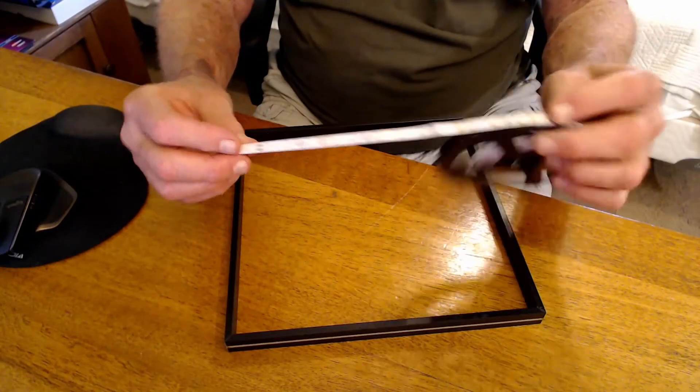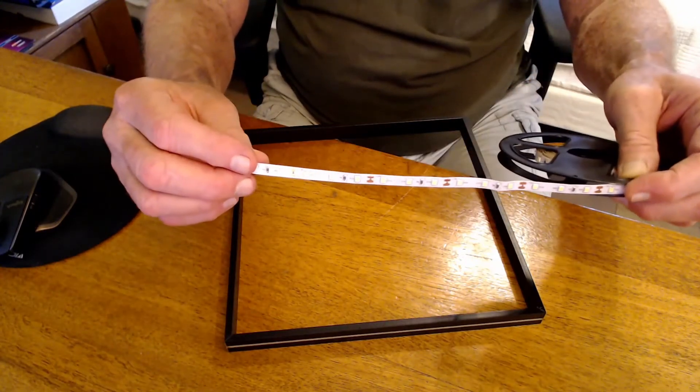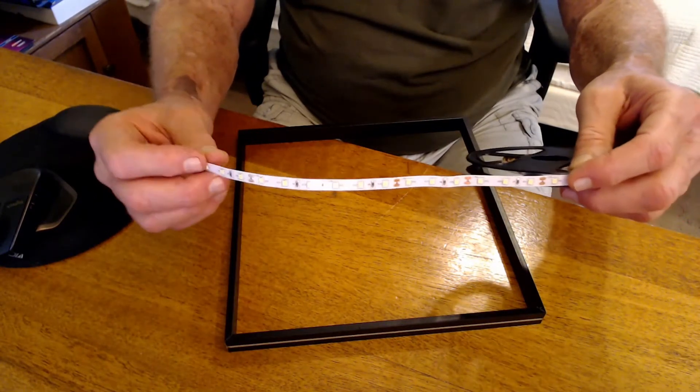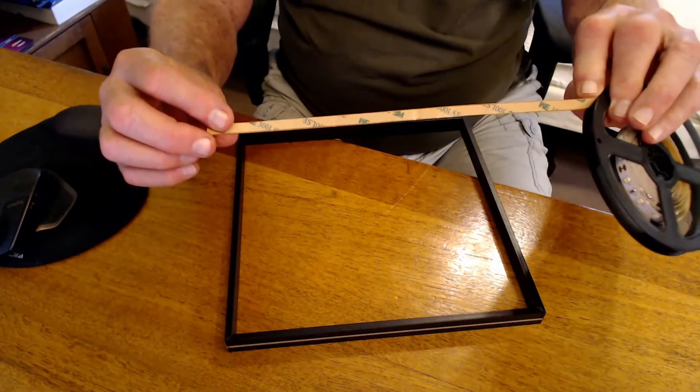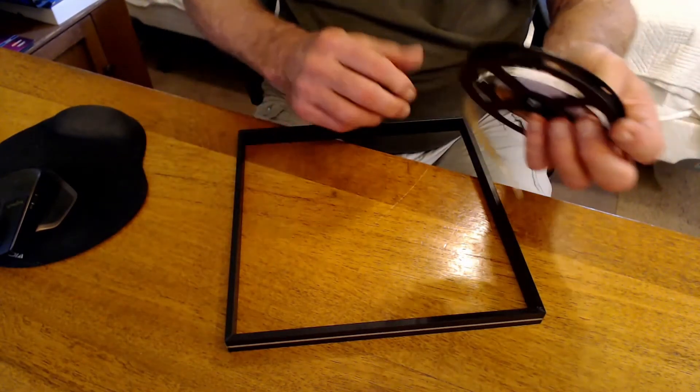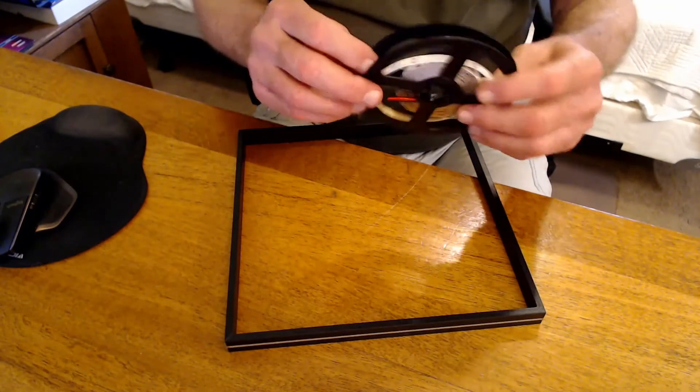And each one of those little yellow dots on there is a separate LED and they're very bright. They work off 12 volts DC. The back is self-adhesive. You just peel it off and stick like any piece of tape. So that's going to be the first step. See what happens.